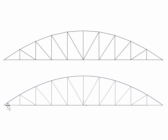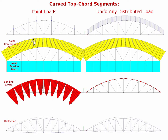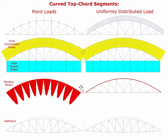Now let's look at the structural behavior of the structure with the continuously curved top chord. Under point loading versus uniformly distributed load, our axial compression stresses are very similar between the structure on the left and the structure on the right — the only difference being the loading condition. Very similar axial tension stress as well.